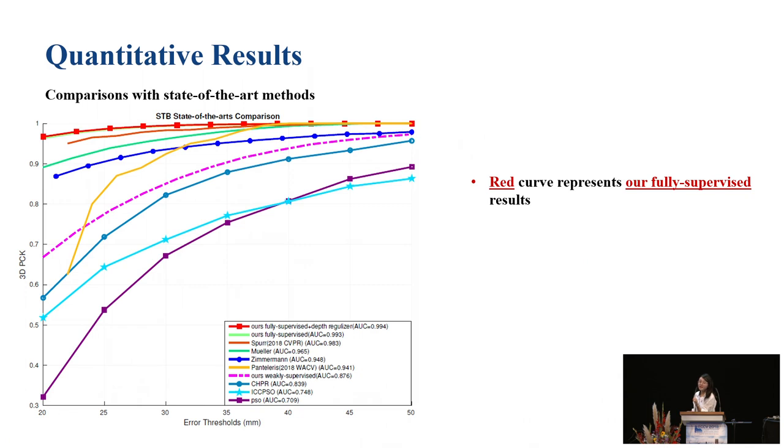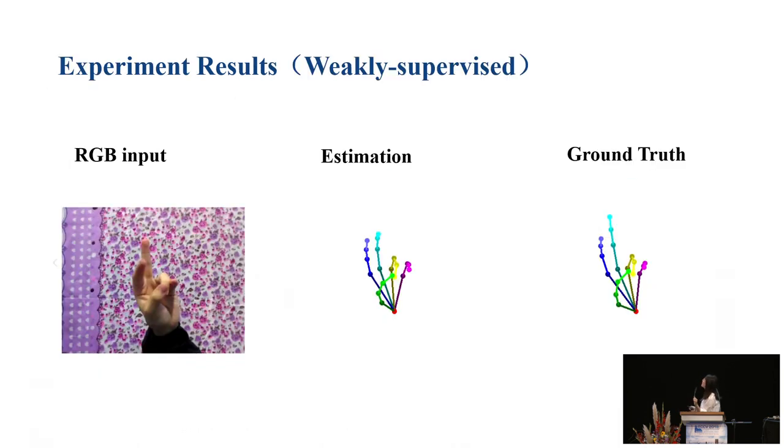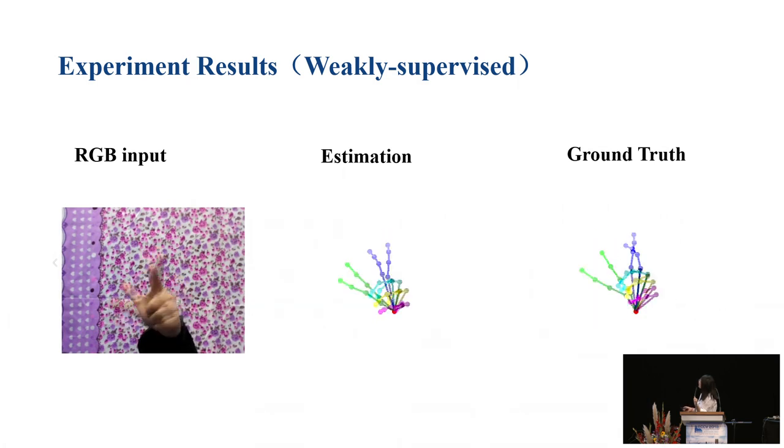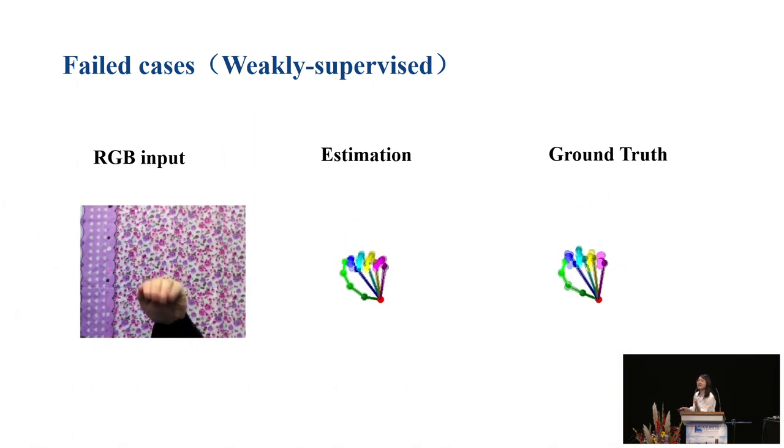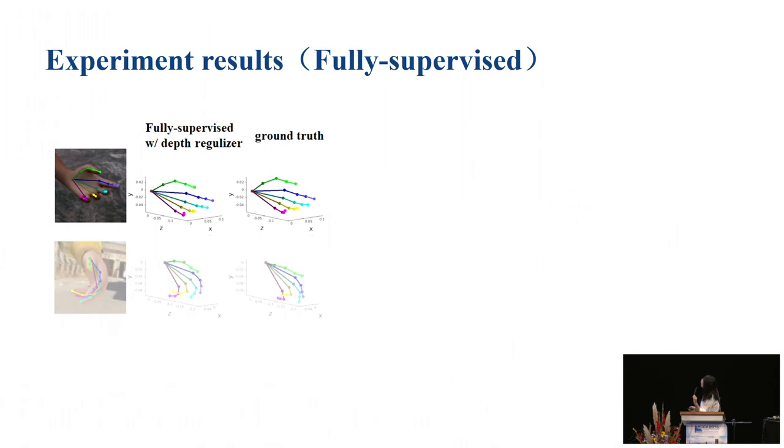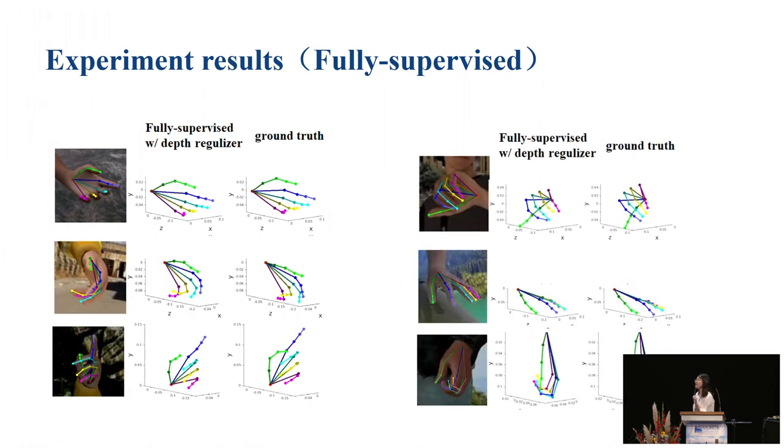We also show comparison with state-of-the-art methods. The red curve represents our fully supervised method, and the pink curve is the weakly supervised method. Other curves are mostly fully supervised methods, so the weakly supervised method can still work as a valid approach. We show a quick view of our dataset results and some failed cases. Since it is a single image work, we show it without any time smoothness.